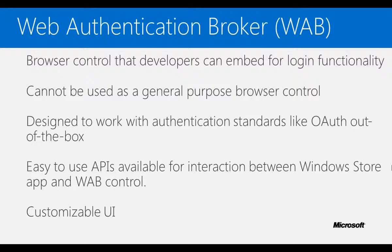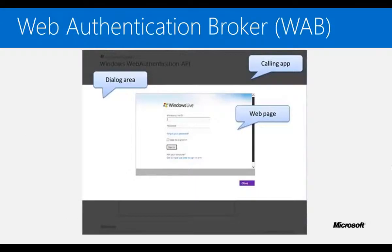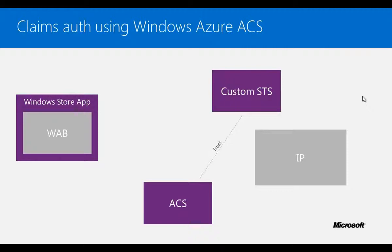Web Authentication Broker works with OAuth out of the box, and we also have easy-to-use APIs available to interact with it. After a user is authenticated against an identity provider using Web Authentication Broker, these APIs can be used to extract user details or the token for further access to resources. Web Authentication Broker also has a customizable UI and is divided into different panes which you can customize. Let's see how claims authentication works with Windows Azure Access Control Service and Web Authentication Broker in Windows Store applications.